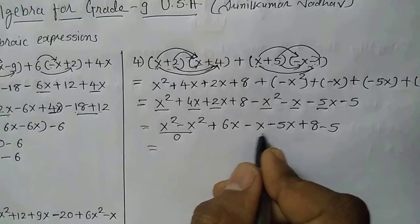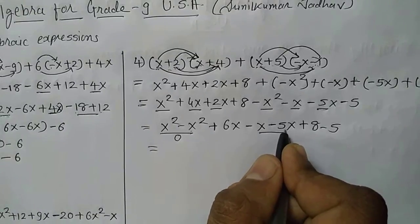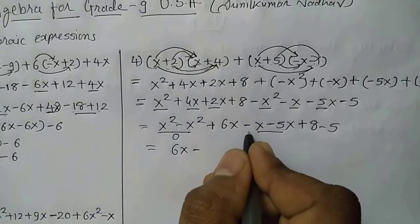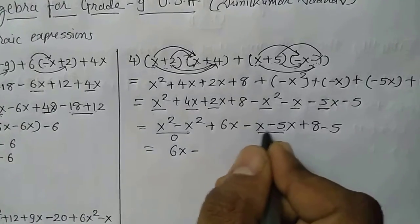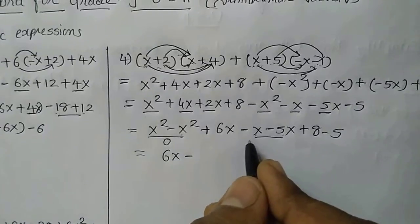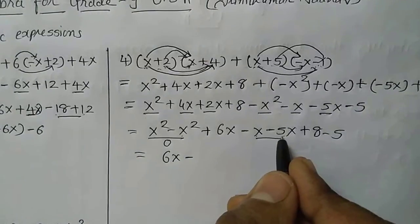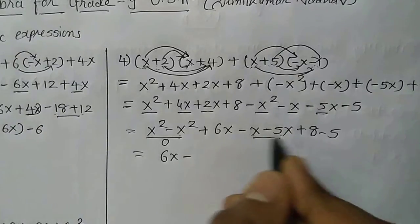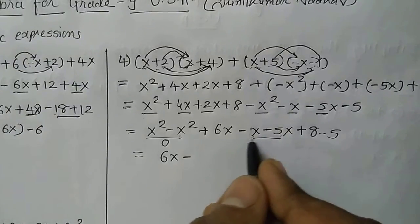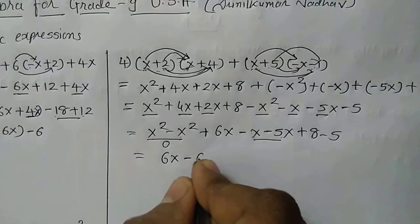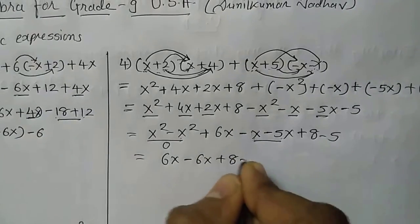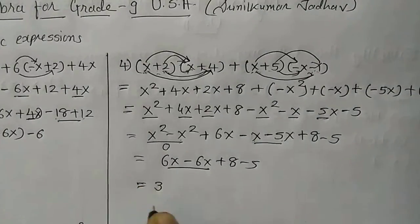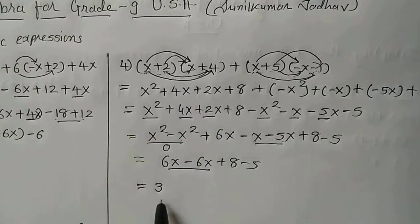The remaining x terms: minus 5x minus x. That is 6x minus 5x minus 1x. The constant terms: plus 8 minus 5. 8 minus 5 equals 3. So the ultimate answer of this expression is 3.